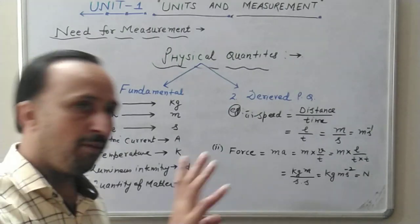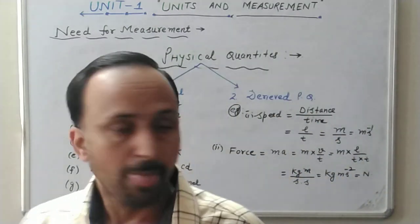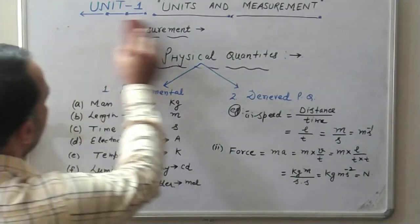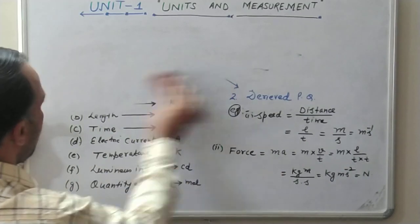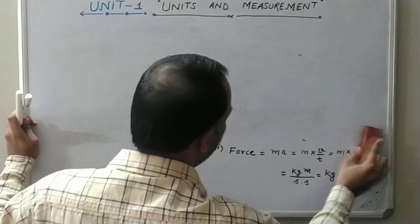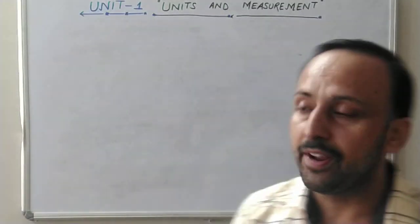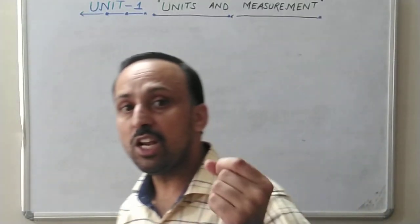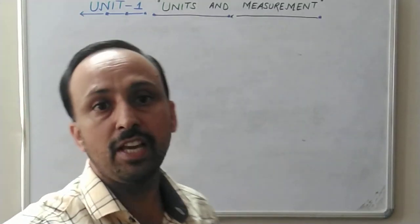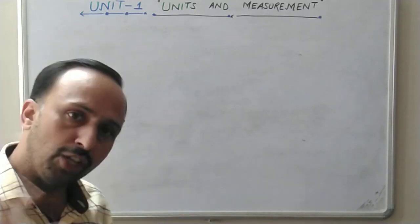Before I proceed further, I want to recap. We covered: number one — the need for measurement; number two — how we can do measurement; number three — what physical quantities are and how we define them; and how physical quantities are classified into fundamental and derived types, along with how we can get an idea about these quantities.